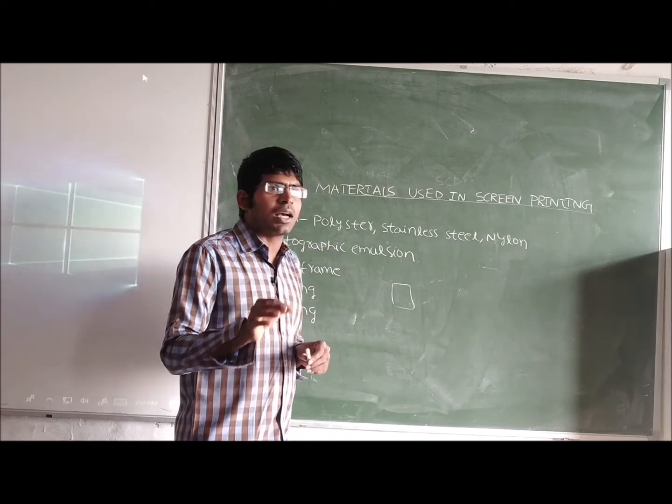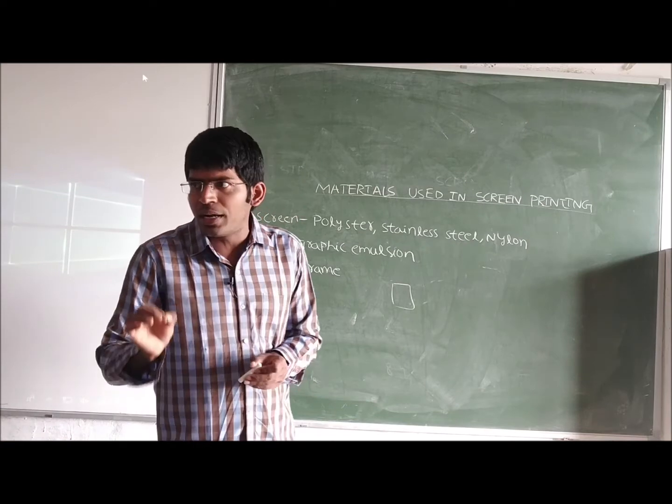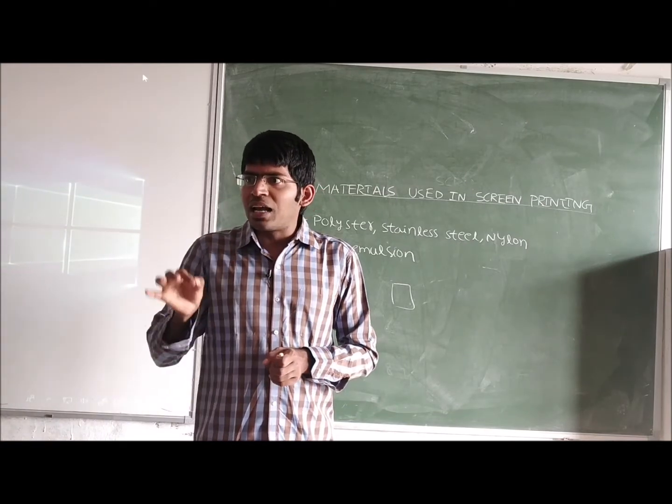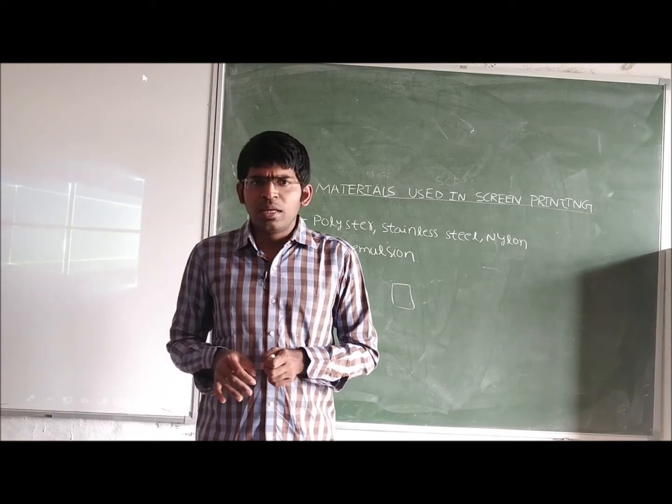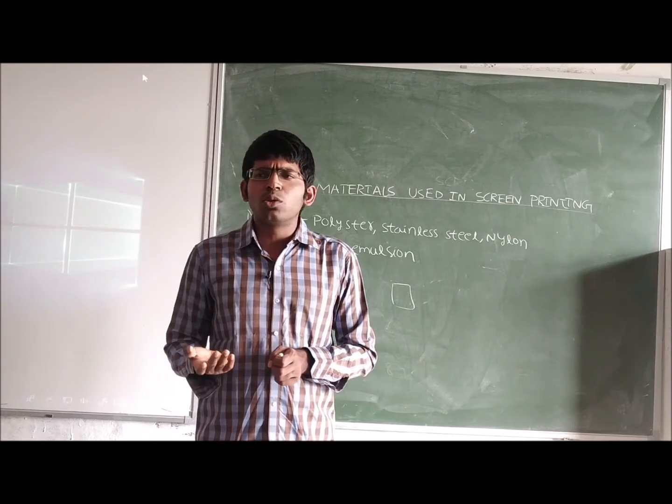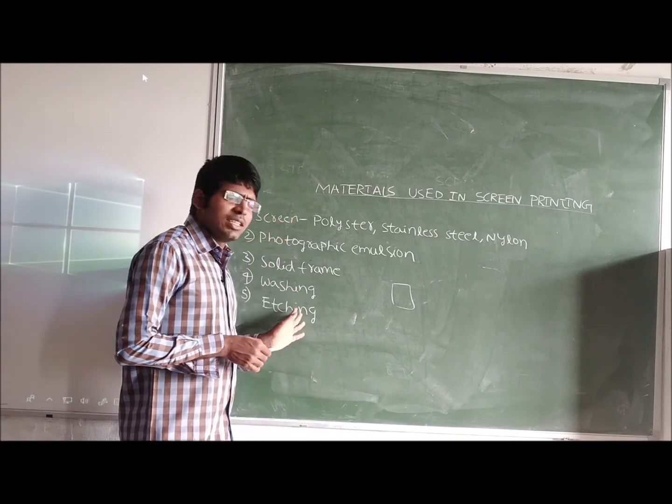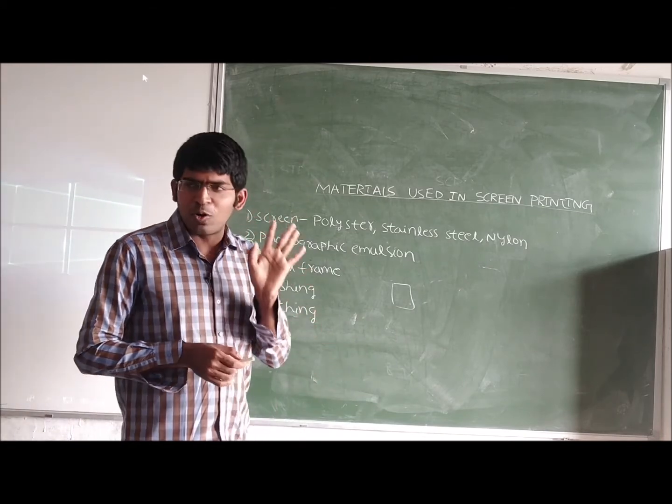For etching, for removing unwanted copper, we can use ferric chloride, chromic acid, or alkaline ammonium chloride. These are the different materials used in screen printing, but in majority cases for etching we generally use ferric chloride.